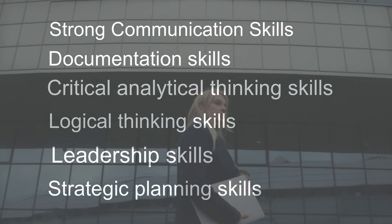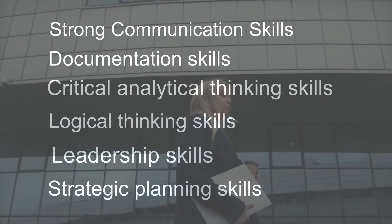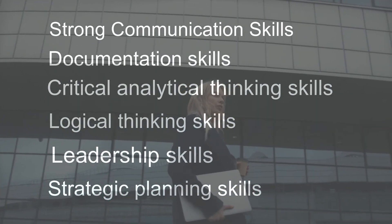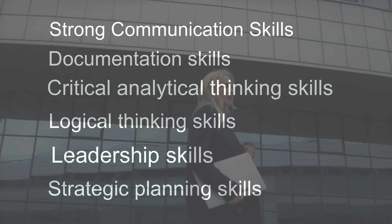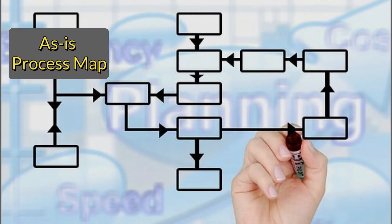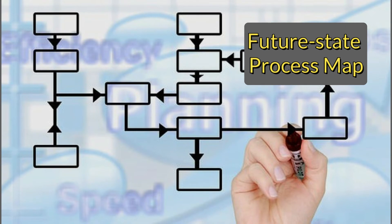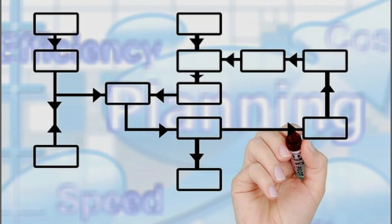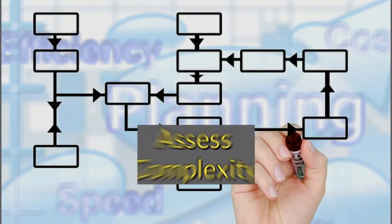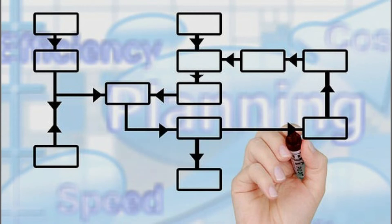While you create the process description document, you will map the as-is process — so you should be good at process mapping, designing a future state map showing how the process would look after automation, and estimating the complexity of process steps by categorizing them into high, medium, or low.